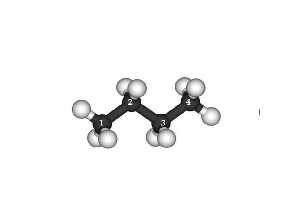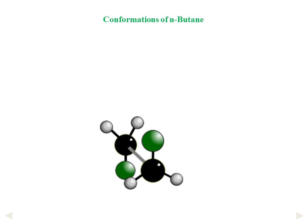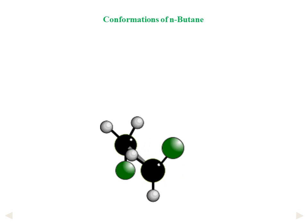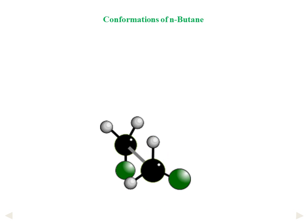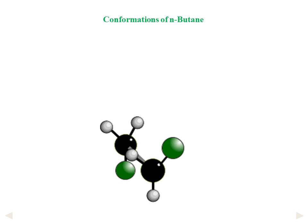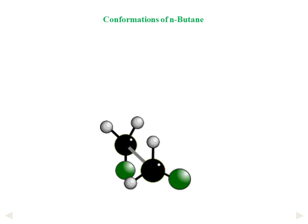If we rotate carbon number 3 with respect to carbon number 2, it gives an N number of conformations, as seen in this video. This rotation changes the N number of dihedral angles.